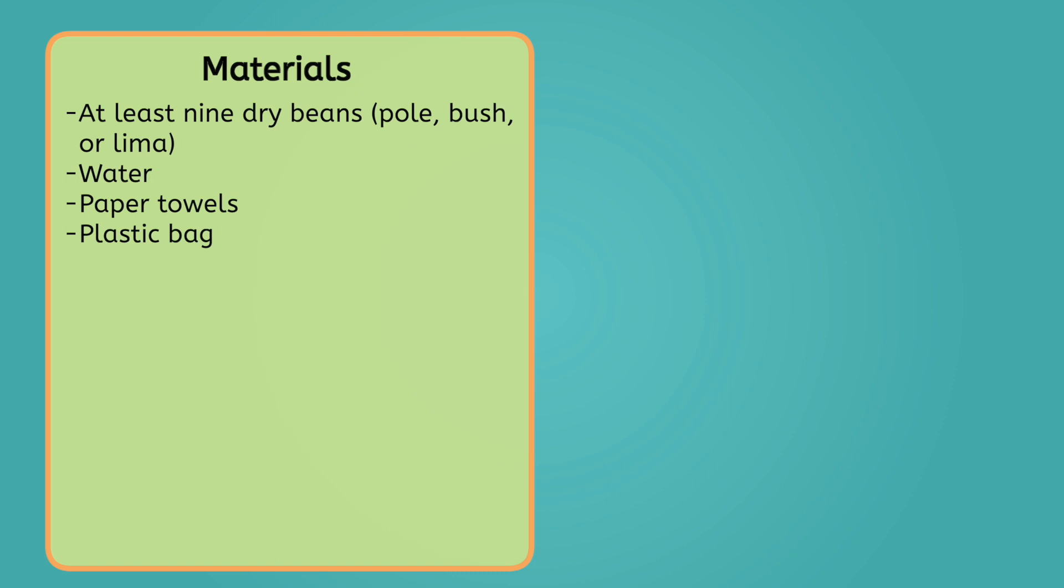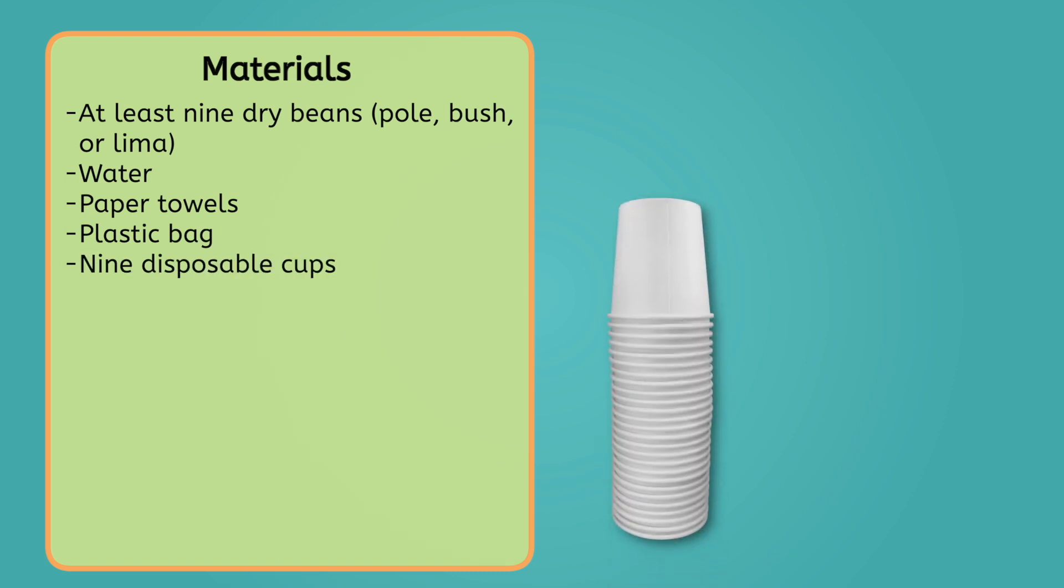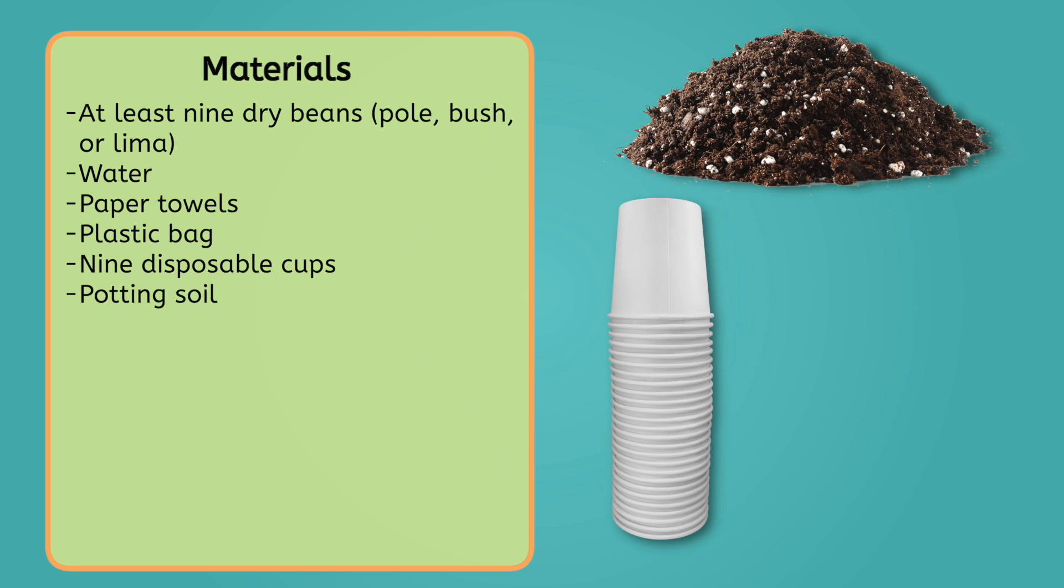To grow your bean plants, you'll need 9 cups, potting soil, and more water. You'll also need a marker to label your cups.